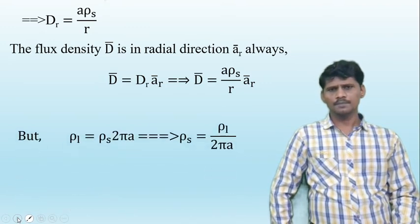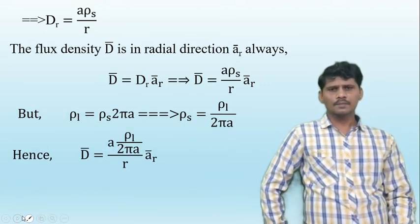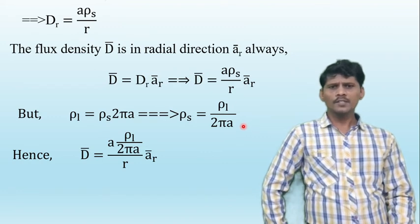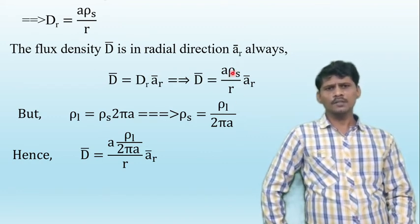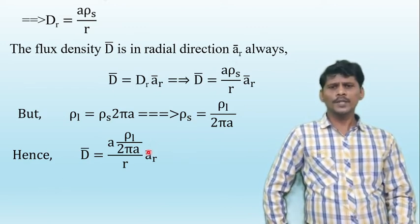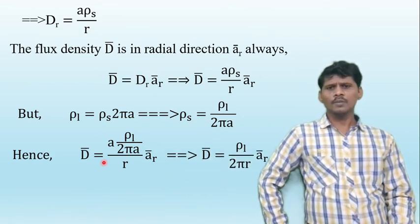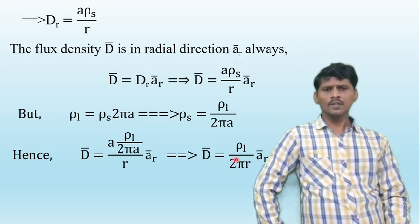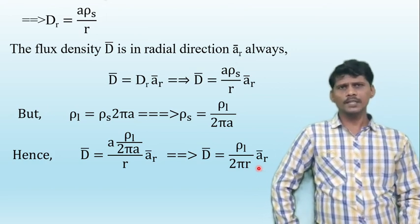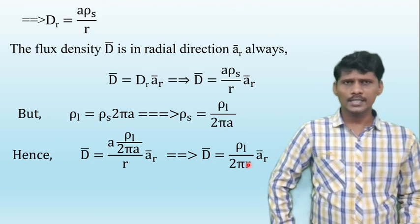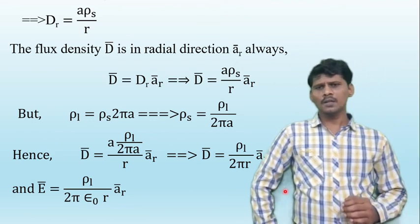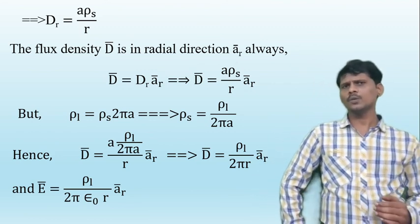Since rho_L equals rho_s times 2πa, we have rho_s equals rho_L divided by 2πa. Substituting rho_s into the expression, D-bar equals (a times rho_L) / (2πa times r) times r-hat. The 'a' cancels in numerator and denominator, giving D-bar equals rho_L / (2πr) times r-hat. This is the electric flux density due to the coaxial cable. The electric field intensity is E-bar equals D-bar divided by epsilon_0, which equals rho_L / (2π epsilon_0 r) times r-hat.